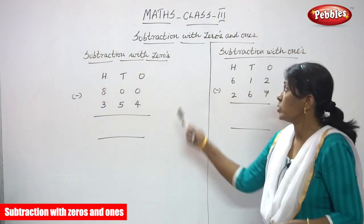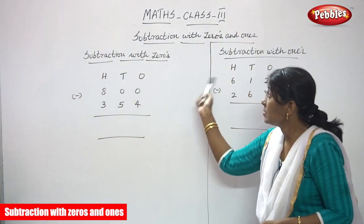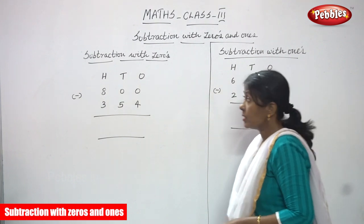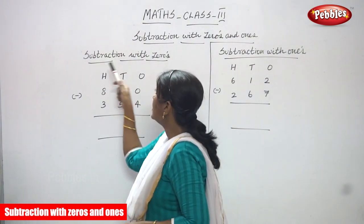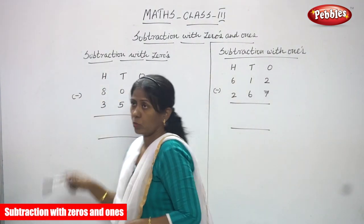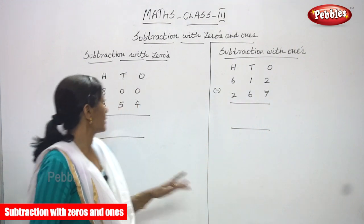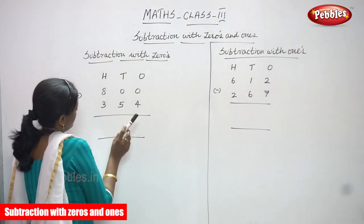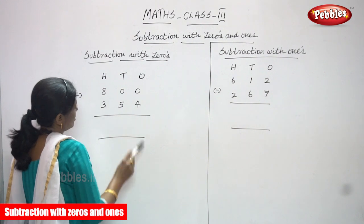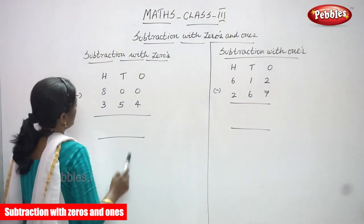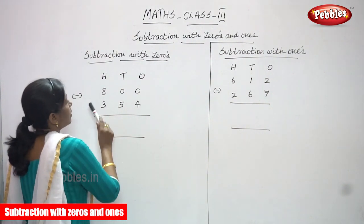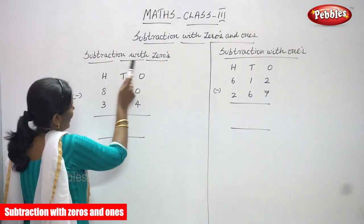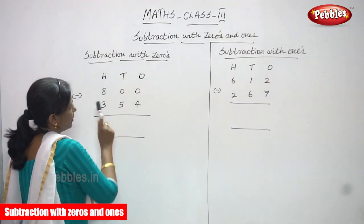In today's class we are going to see subtraction. The heading is subtraction with zeros and ones. So first heading: subtraction with zero. The first number is 800, the next number is 354. So this is a three-digit number, and this is also a three-digit number — but subtraction with zero, this is the heading.